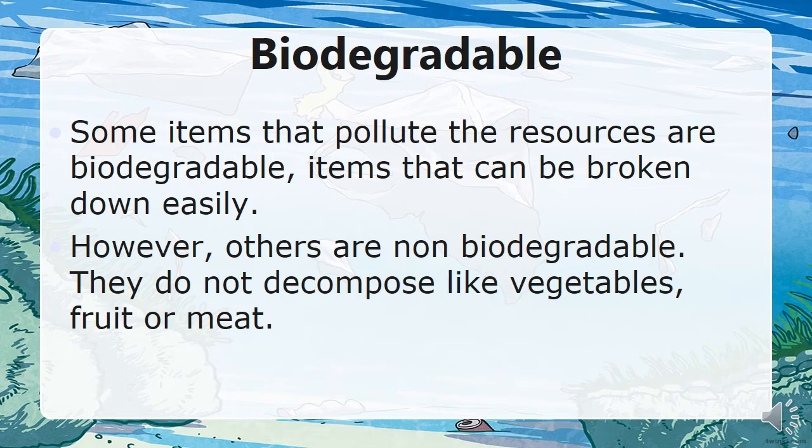Some items that pollute natural resources are biodegradable — meaning they can be broken down easily. However, others are non-biodegradable; they do not decompose like vegetables, fruit, or meat. Non-biodegradable items stay on the earth for a long time.